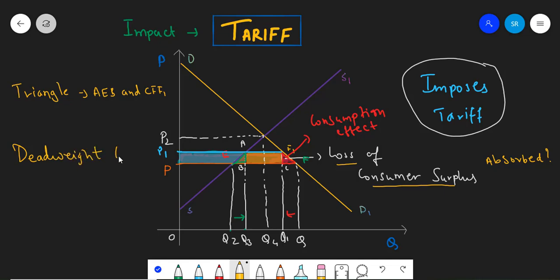This is one of the reasons why the propagators of free trade would not want tariffs to be imposed. I hope this diagram helped you understand how tariffs impact the society. In the next video, we will see how quota impacts the society. That's it from this video. See you in the next one.